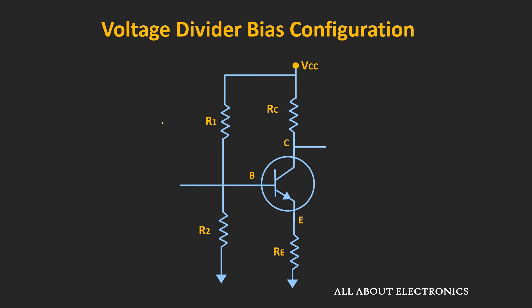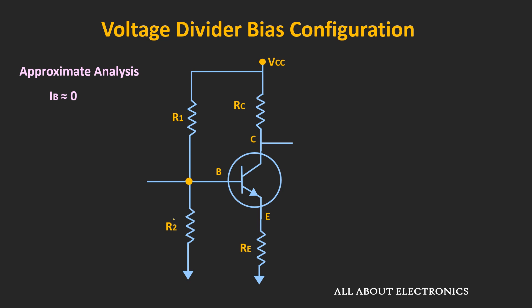Now, first of all we will do the approximate analysis and using that, we will find the operating parameters. That means we will find the expressions for this collector current Ic and the voltage Vce. During this approximate analysis, we will assume that this base current Ib is almost negligible — that is, Ib is approximately equal to zero.